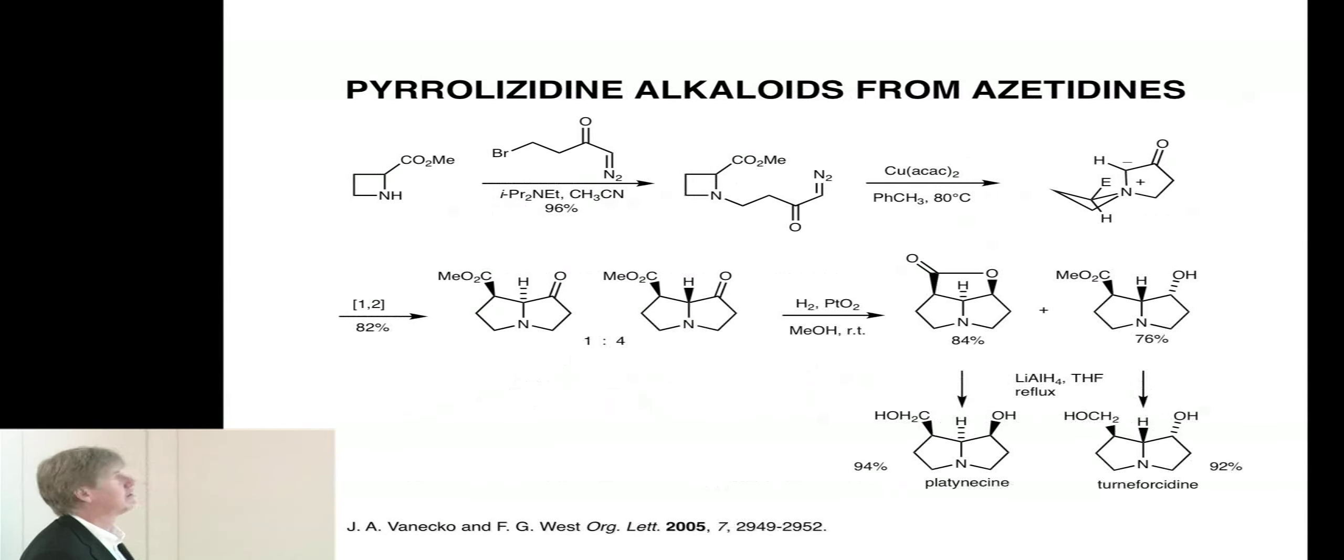That result gave us some confidence that we could do something very similar to what I showed you for epilupinene. But now, with both rings one atom smaller. We start out, instead of with proline ester, with this azetidine ester. Our diazo ketone is also one carbon shorter. We end up with this substrate.